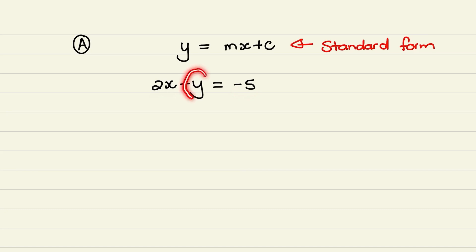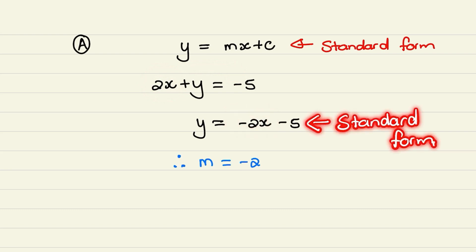What we want to do is have y alone on the left hand side. So in order for us to get y alone, we need to move the 2x to the right hand side. So when I move the 2x to the right hand side, it turns into a negative 2x. And now the equation is written in standard form and we can read the gradient from the equation. So the gradient in this example is equal to negative 2.